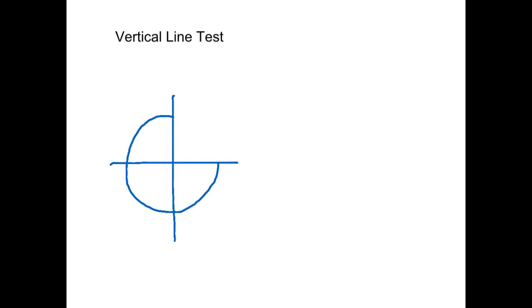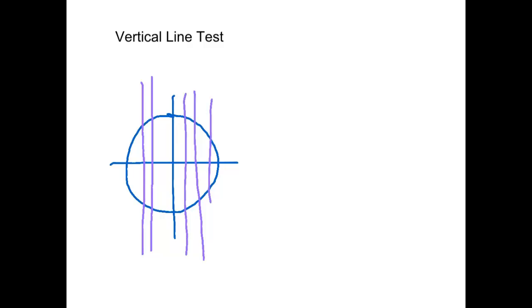I want to share one tool we like to use: the vertical line test. If you're looking at these graphs — let's say the circle graph from before — think about an imaginary vertical line that runs through the graph, and you can move it wherever you want. The vertical line test asks: does your vertical line hit more than one point on the graph?